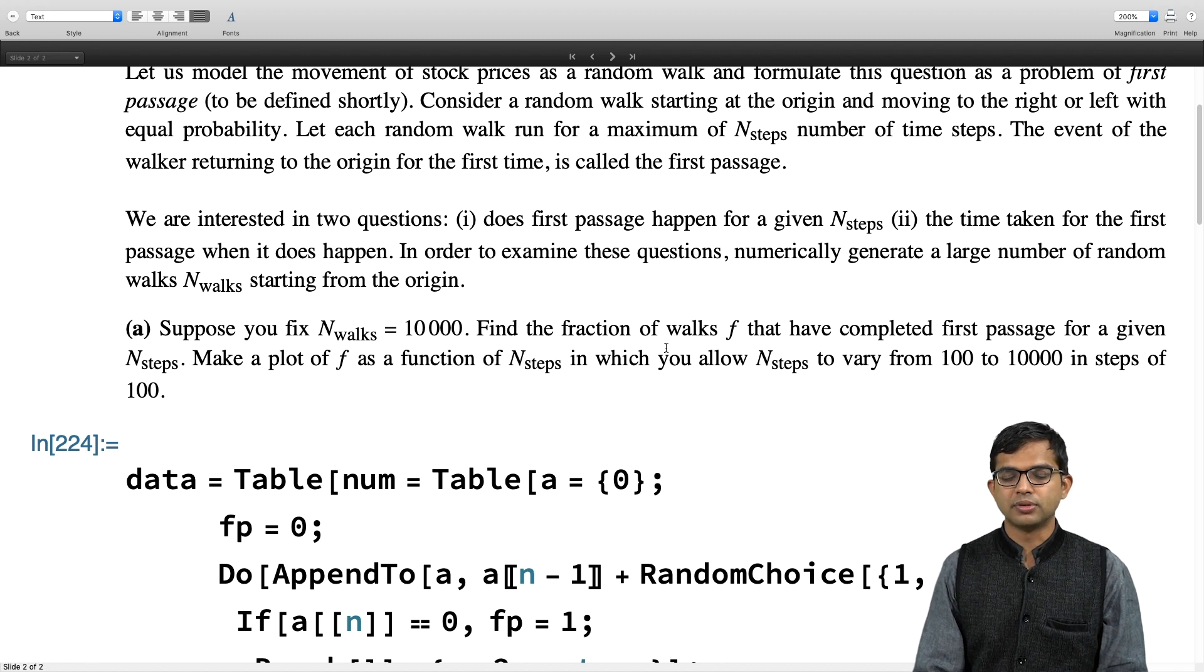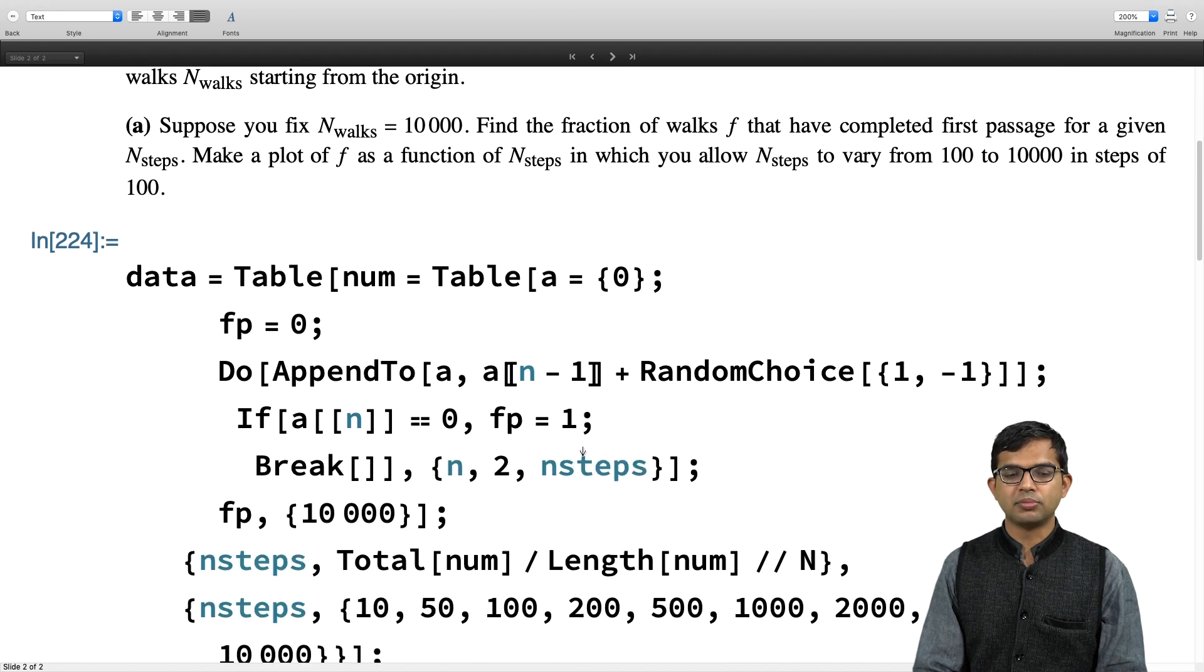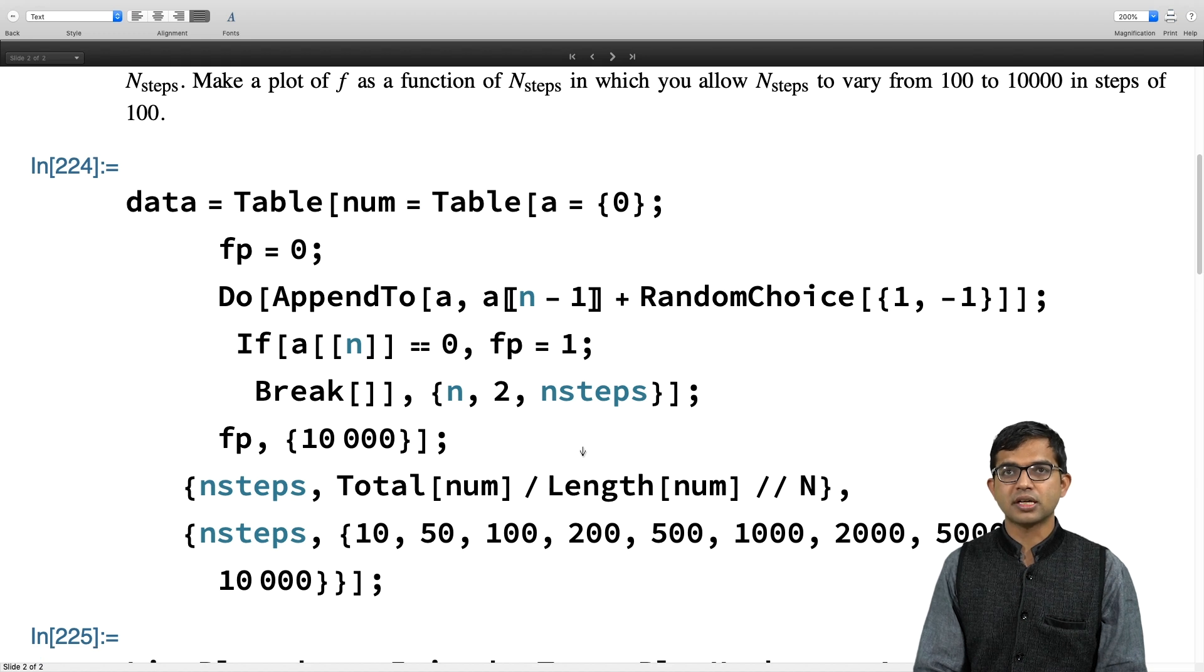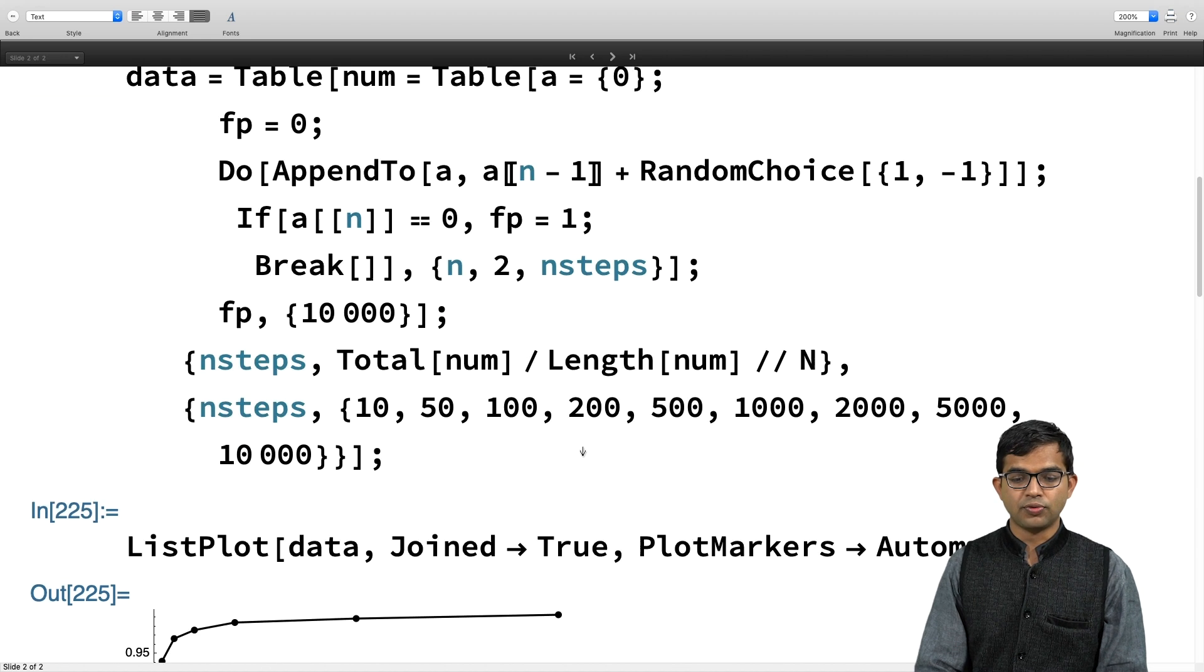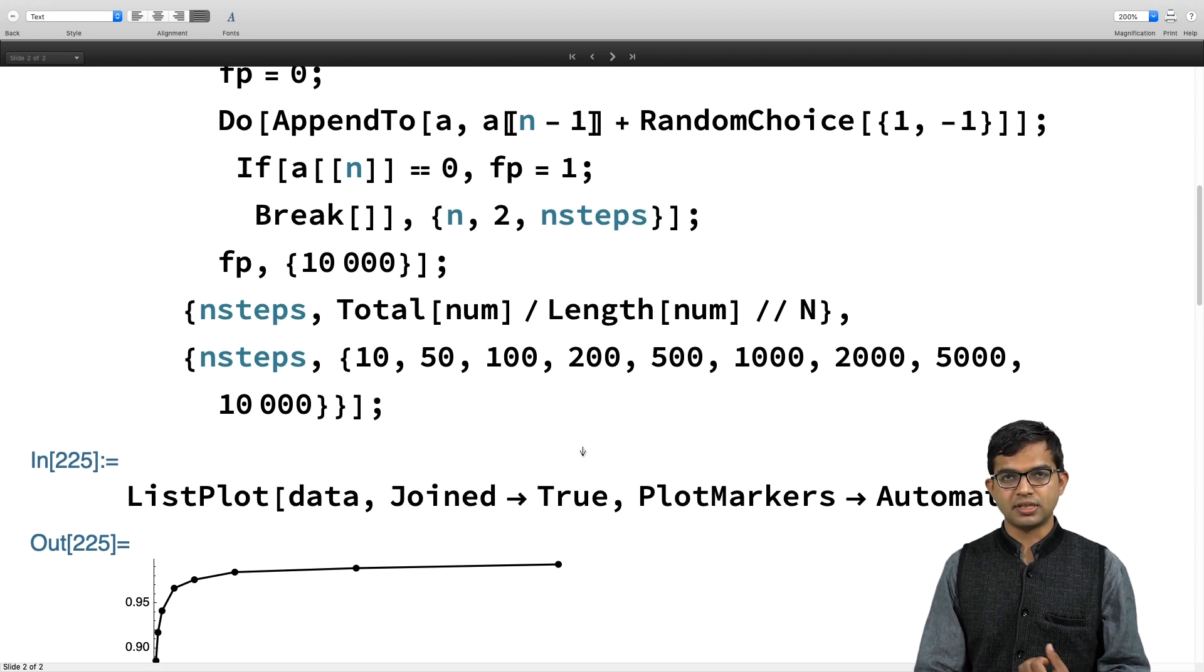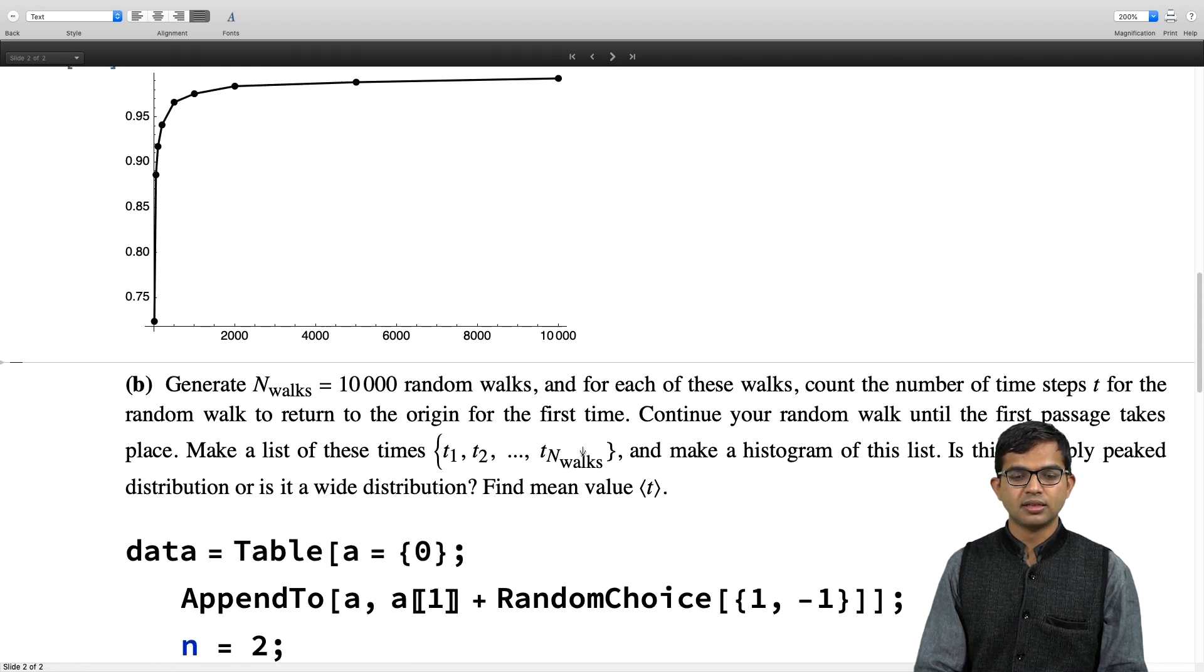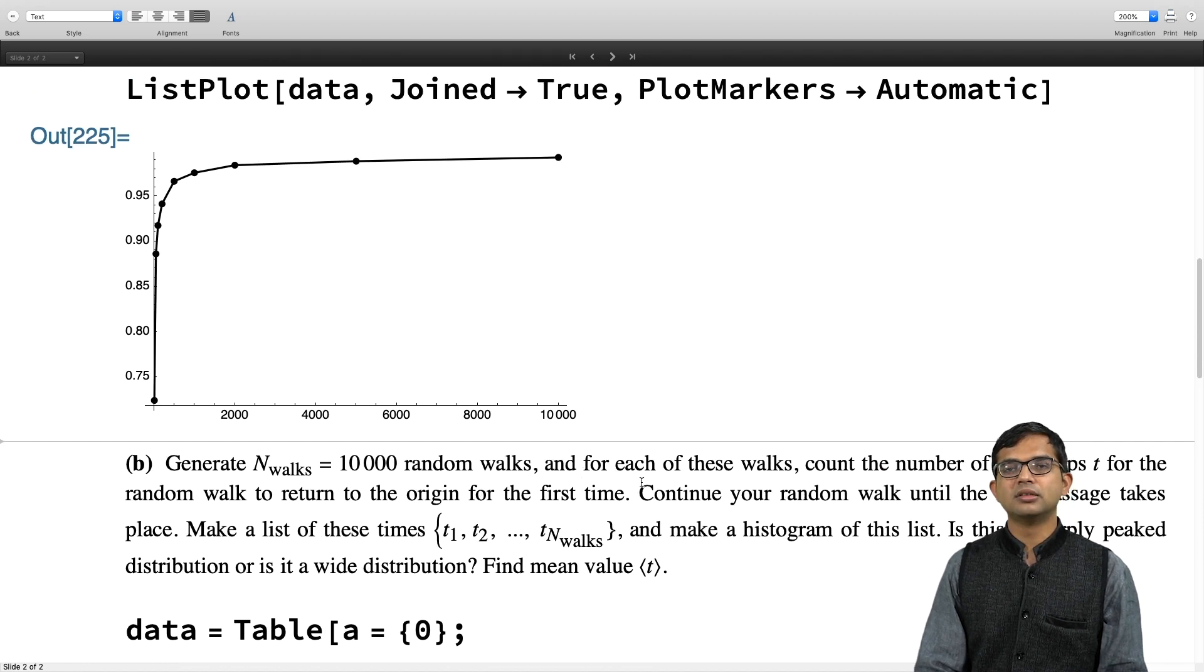With unit probability, there is going to be first passage no matter what. So the stock investor would just need to wait forever. If he is willing to wait for long enough, then there is going to be first passage. Then I was a bit hasty in saying something like forever. So let us actually ask ourselves, what is the typical amount of time that he has to wait before actually first passage happens.